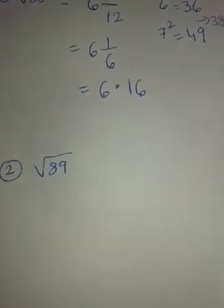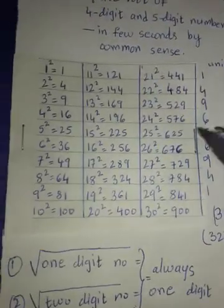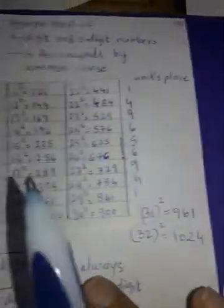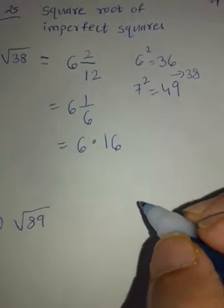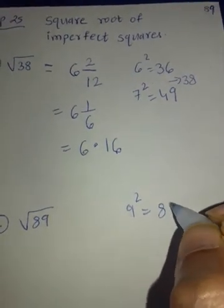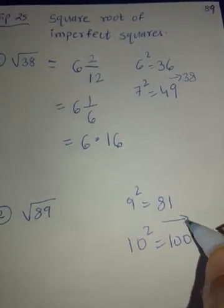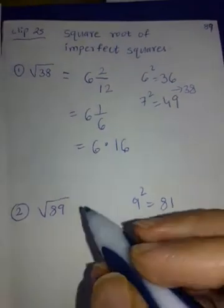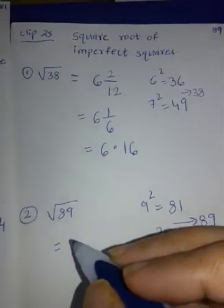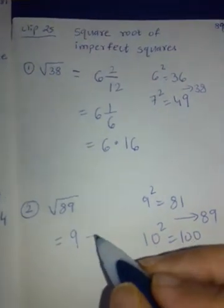Square root of 89. 89 lies between which two squares? 81 and 100. 9 square is 81. 10 square is 100. 89 lies here somewhere. So the answer is going to be lower of the two, 9 and 10. So I am going to write 9. So it's going to be more than 9, that is definite. But how much more? Let's see.